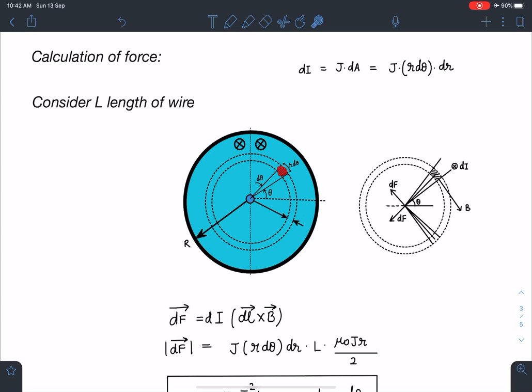So this wire is going to experience a force. Direction of this di current is going into the plane, so dl vector will be taken into the plane. Magnetic field B is along the tangent to this circle. So if you check direction of dl cross B using right hand rule, dl cross B, because dF is i dl cross B.